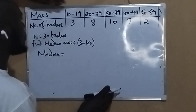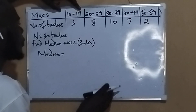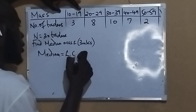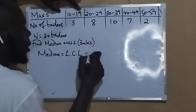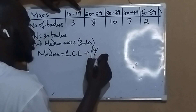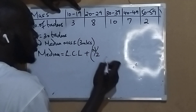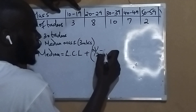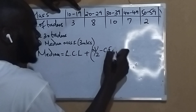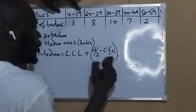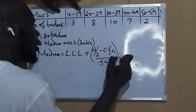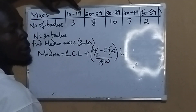You have the lowest class limit, plus n over 2, minus the cumulative frequency above, over the frequency within, times the class interval.